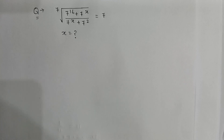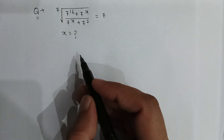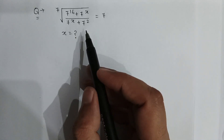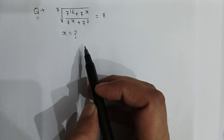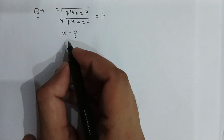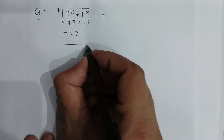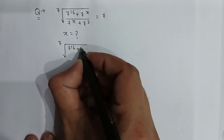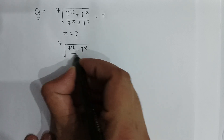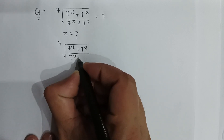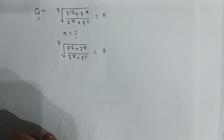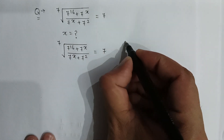Here is a very nice radical problem: the 7th root of (7 to the power 16 plus 7 to the power x), all over (7 to the power x plus 7 to the power 2), is equal to 7. Find the value of x.